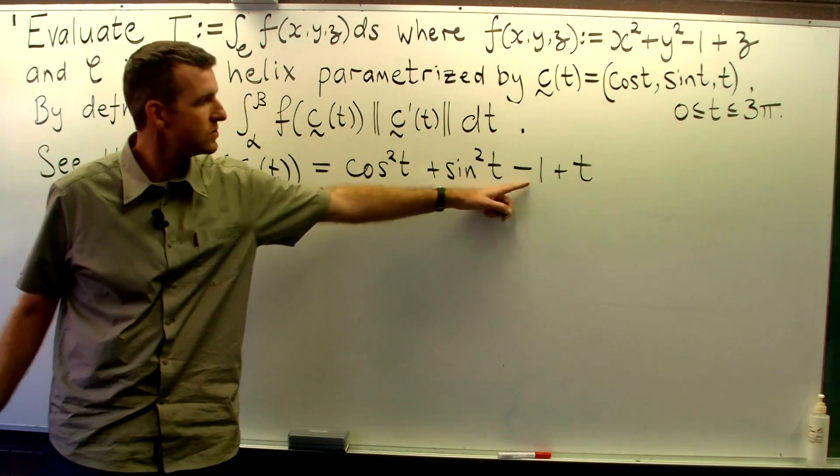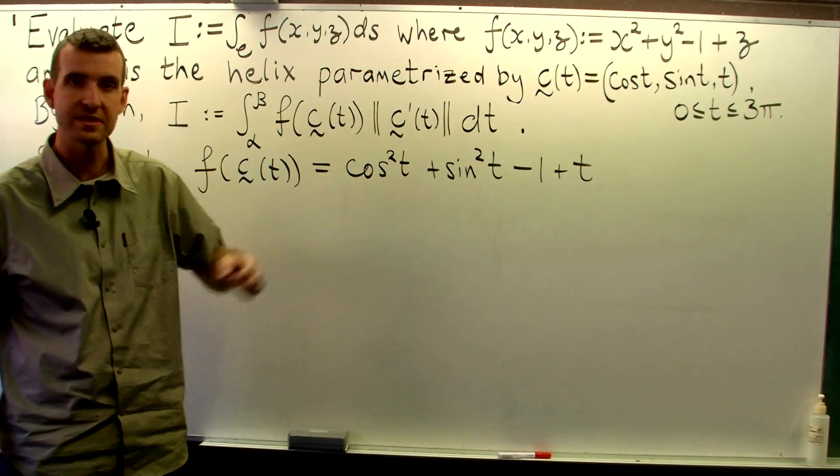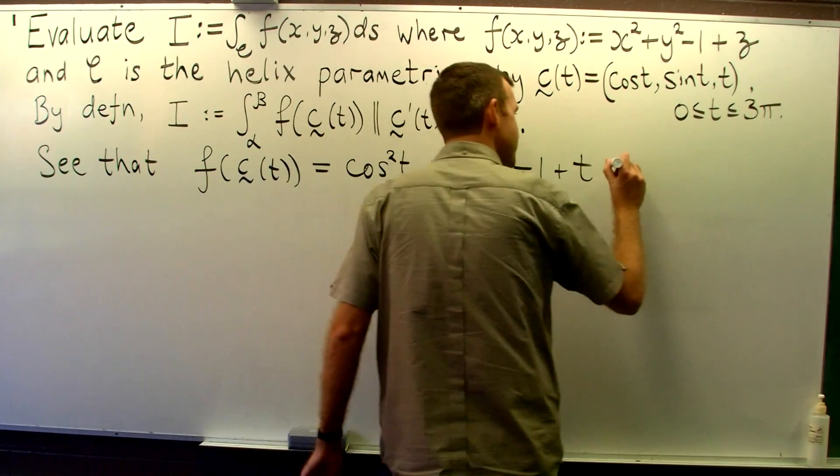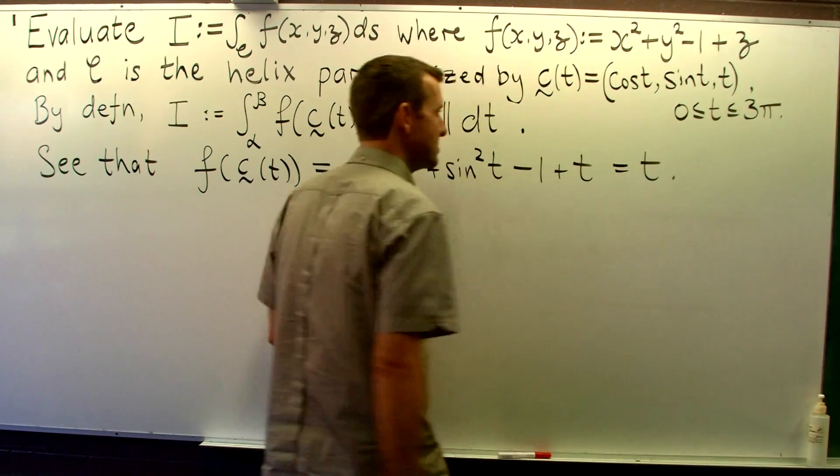Now if you look closely here, you'll see some nice simplification and cancellation. Cos squared plus sine squared is 1. So we get a very simple function of t here.